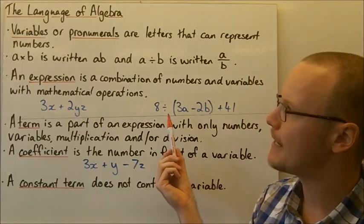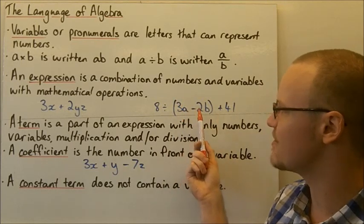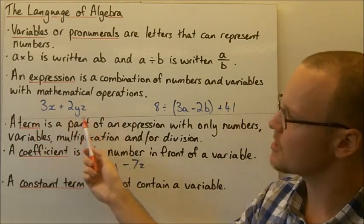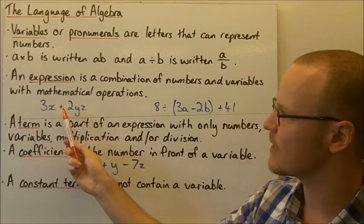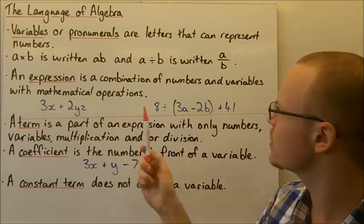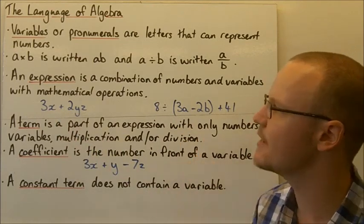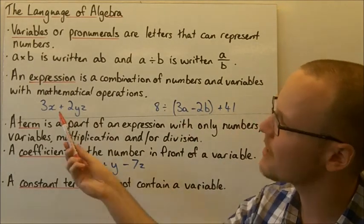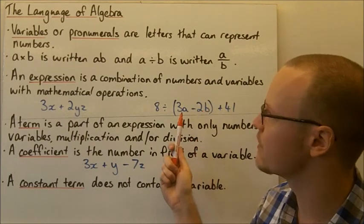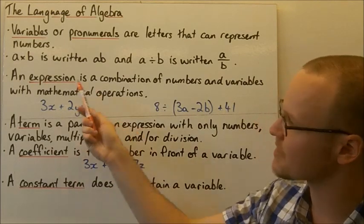Here we've got another expression: 8 divided by, then in brackets, 3a minus 2b — so that's 3 times a minus 2 times b — plus 41. These are expressions, and they've got all the mathematical operations in here: addition, division, subtraction, multiplication between the 3 and x, and brackets. An expression can have all of these different things — numbers like 3, 2, 8, 41, and variables or pronumerals like x, y, z, a, and b.